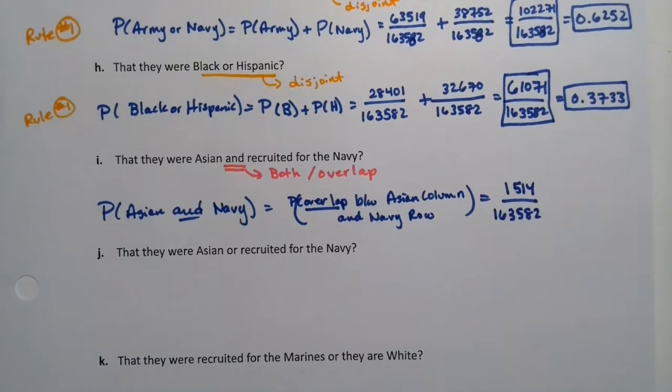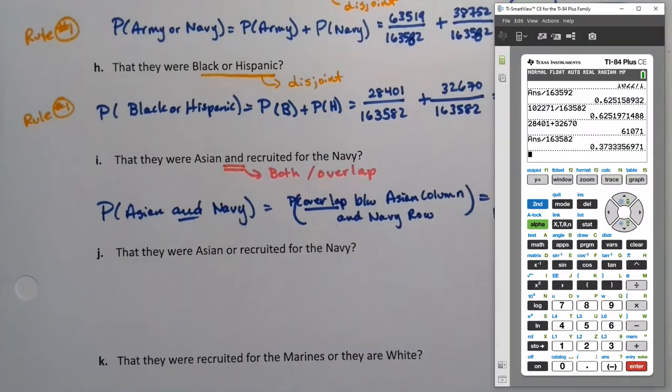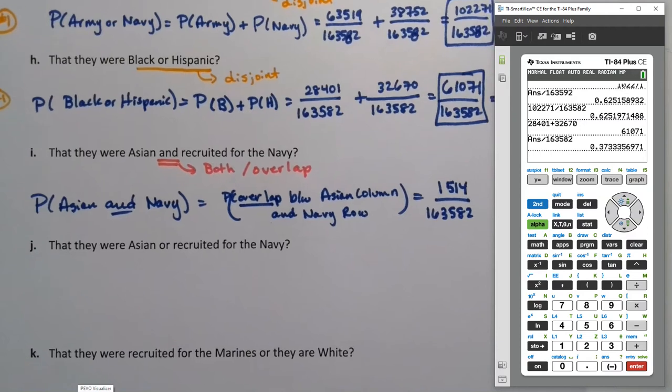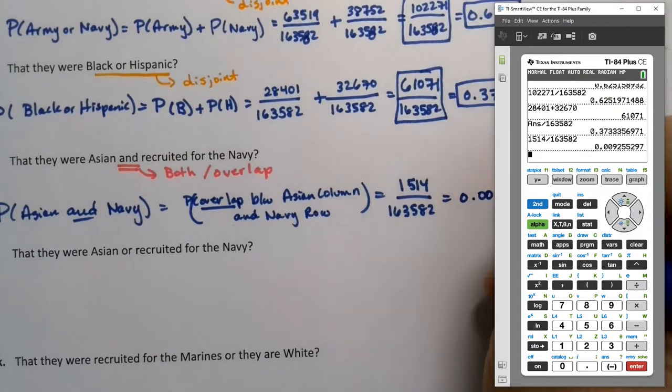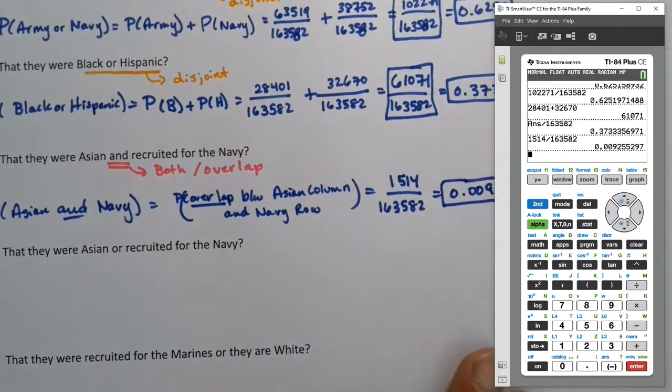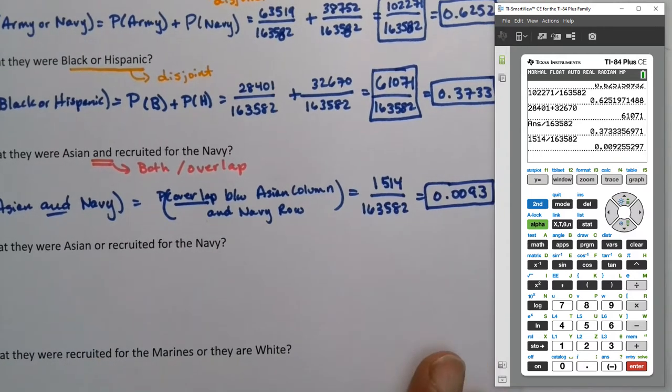That's a perfectly valid probability, but since they asked for four decimal places, I will find them. It's 1,514 divided by 163,582, and we get 0.0093. If we're rounding to four decimal places, that five rounds that two up. So we'll go with 0.0093.